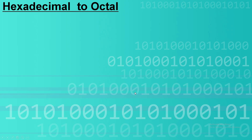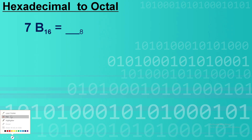Hello, good day everyone. Today I'm going to show you how to convert hexadecimal to octal. First, I have here the example number 7 and B. If we're going to look at the ASCII table, the equivalent of letter B in decimal is 11. So therefore, we will convert these two numbers to decimal first.